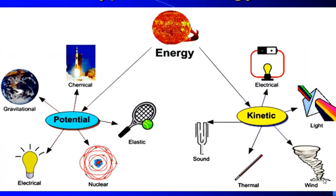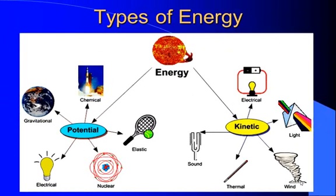Potential types of energy include chemical potential energy, gravitational potential energy, elastic potential energy, electrical, and even nuclear. While kinetic energy can also be electrical because you have moving electrons in a circuit, light with moving photons, wind energy with moving air molecules, thermal energy from the movement and vibration of molecules, and even sound — the movement of air again. So two basic types of energy that we can break down in many, many different ways.